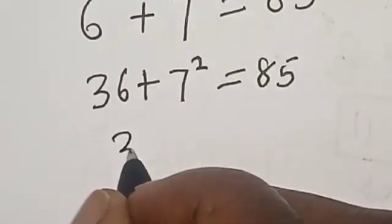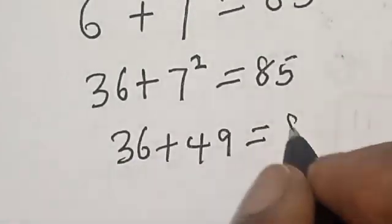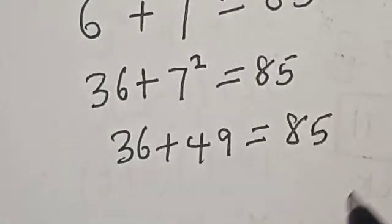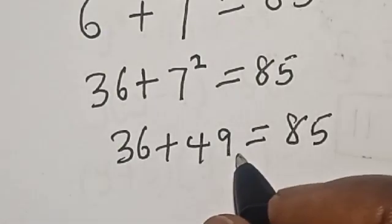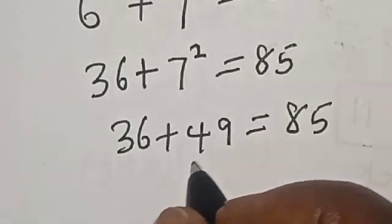Now we have 36 plus 49 is equal to 85, which satisfies the given equation at x is equal to 2.